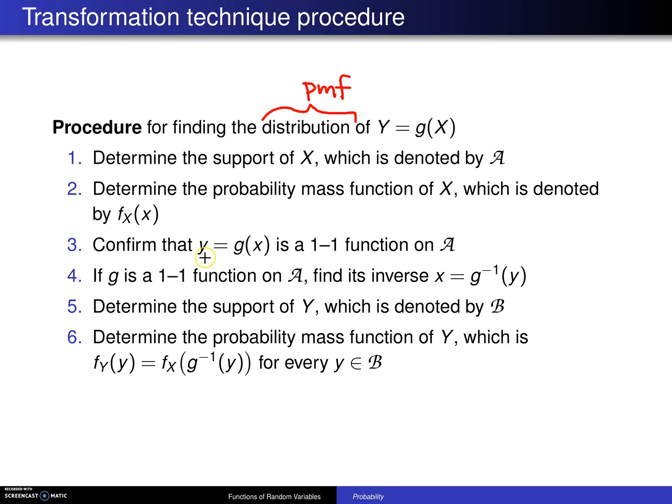Step three, confirm that Y equals g of X is a one-to-one function on script A. This is one of the assumptions that is in the theorem on the previous slide.